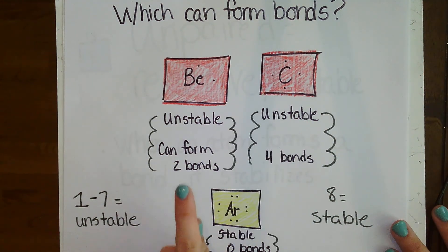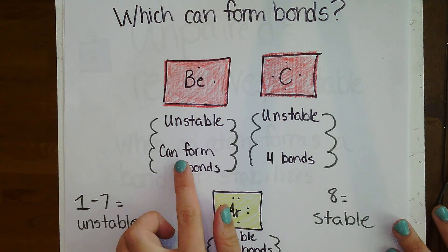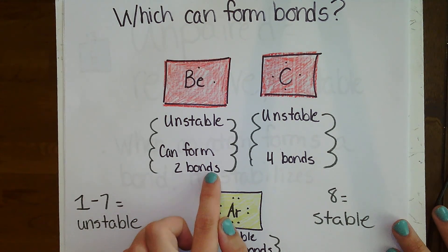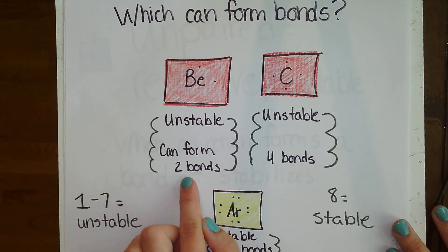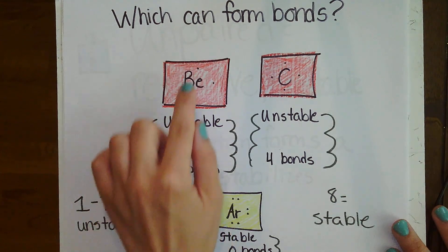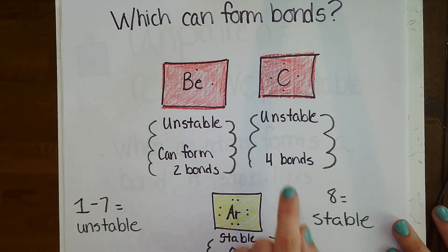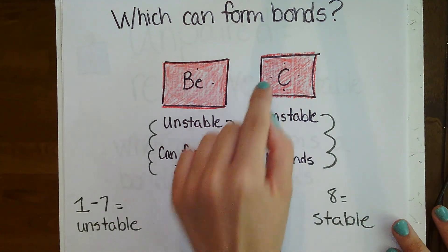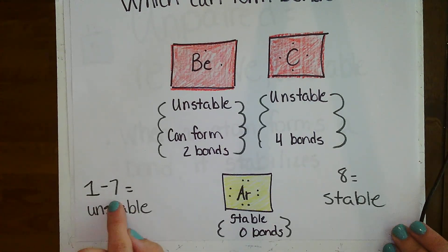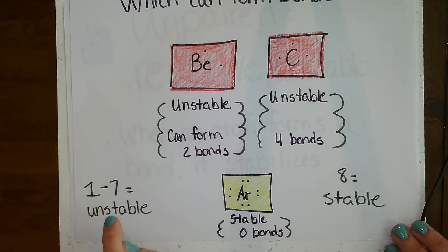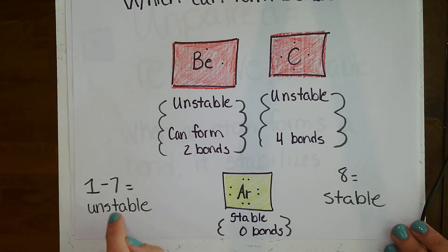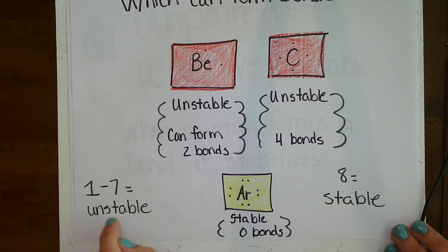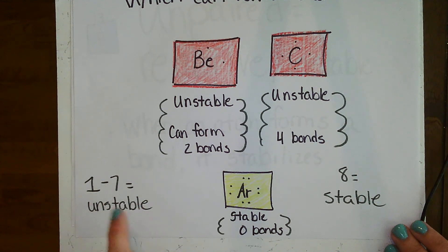The number of unpaired dots determines how many bonds it can form. This can form 2 bonds because it has 1, 2 unpaired dots. This one can form 4 bonds because it has 1, 2, 3, 4 unpaired dots. So groups 1 through 7 are what we call unstable. That means they can form chemical bonds with other elements.